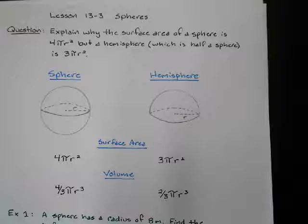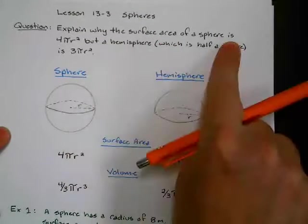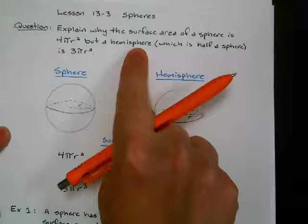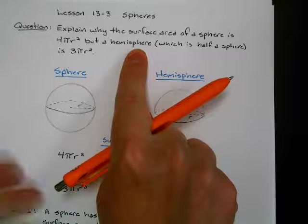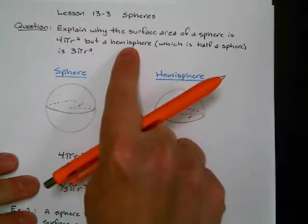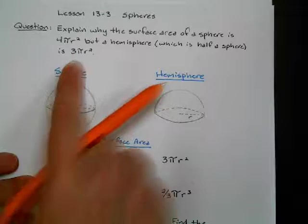Alright Matthew, we've got lesson 13-3, spheres. So our question today is explain why the surface area of a sphere is 4πr², but a hemisphere, which is supposed to be half of a sphere, is 3πr², which doesn't make sense. If a hemisphere is half of a sphere, shouldn't this be half, and shouldn't this be 2πr²?